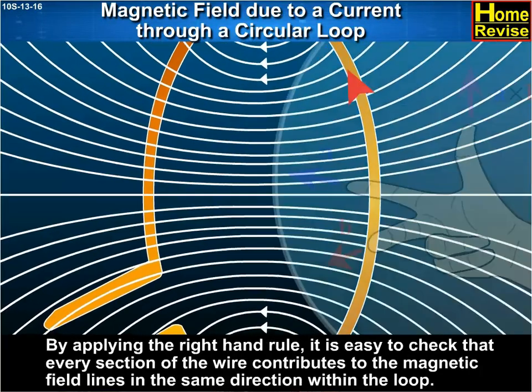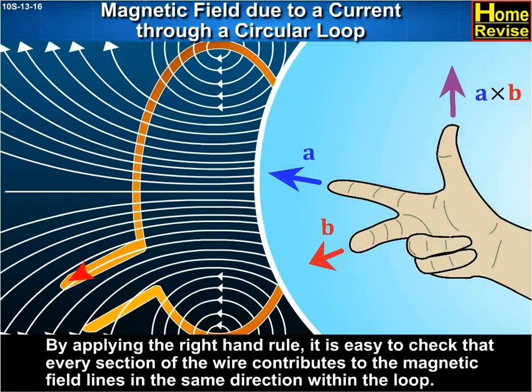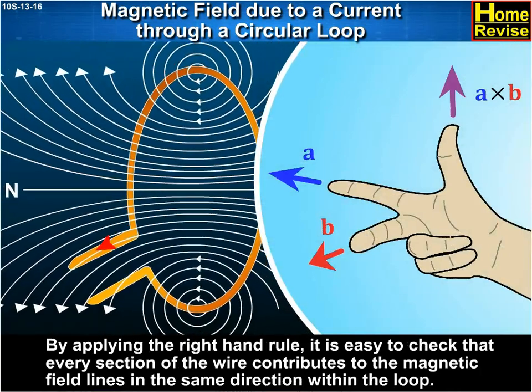By applying the right-hand rule, it is easy to check that every section of the wire contributes to the magnetic field lines in the same direction within the loop.